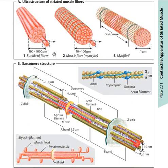Let's see the contraction apparatus. We start with the striated muscles of the skeletal muscle. This is the muscle bundle, and after that muscle bundle we have one muscle fiber called a myosin. Inside that muscle fiber, we have multiple sarcomeres, which is the functional unit of the cell.